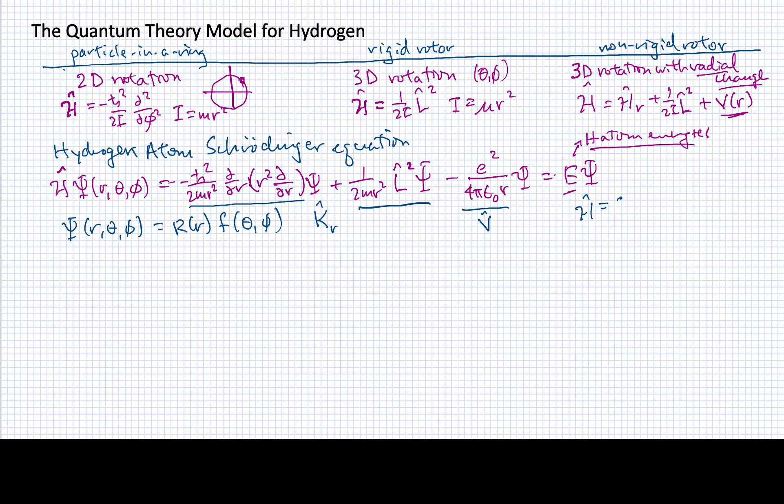This means I can now write my Hamiltonian as the kinetic energy part due to the radial part, plus 1 over 2mr squared times L squared, plus the potential energy part.